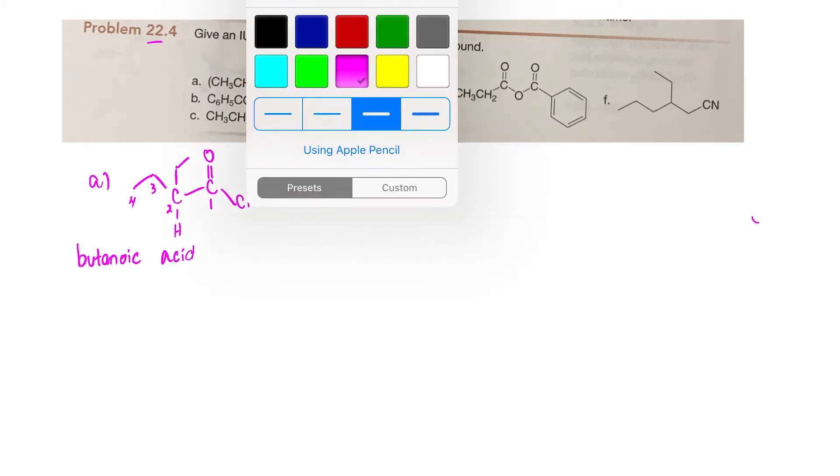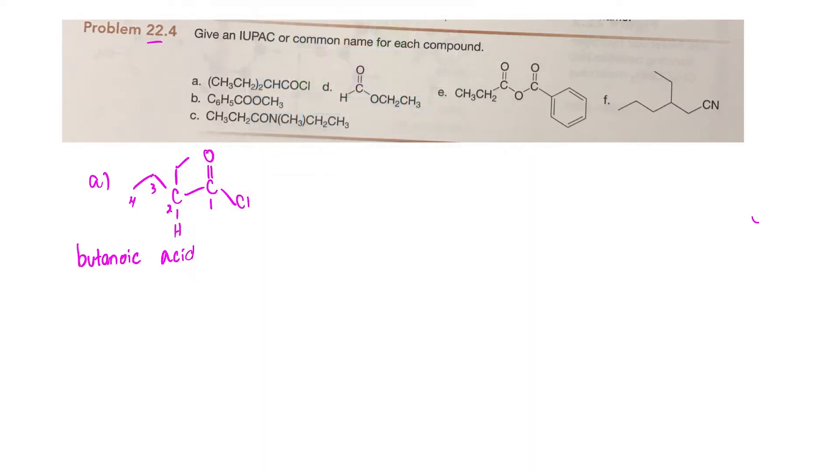Now there's an ethyl group at carbon 3—I'm sorry, carbon 2. And remember how we change the name: we chop off the 'ic acid' and we add 'yl chloride.' So this is going to be 2-ethyl butanoyl chloride.